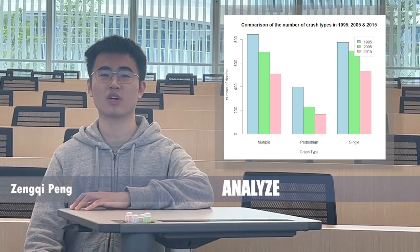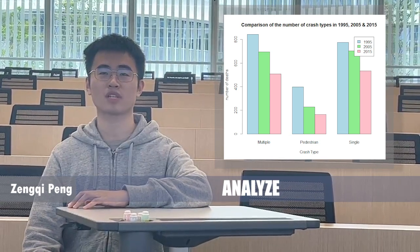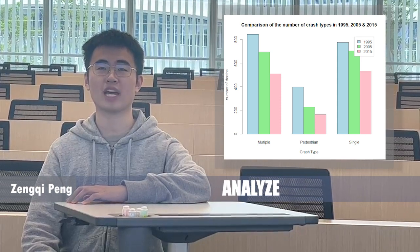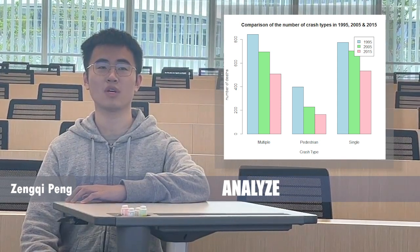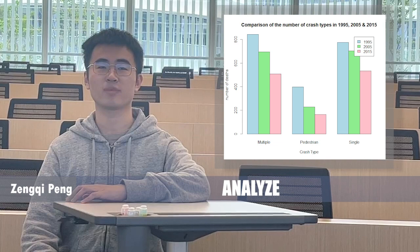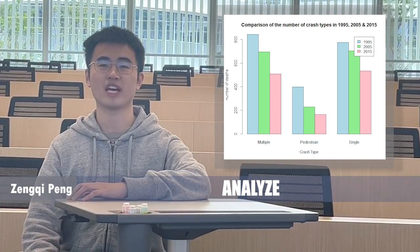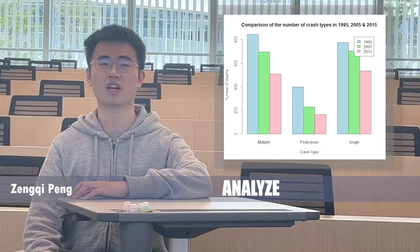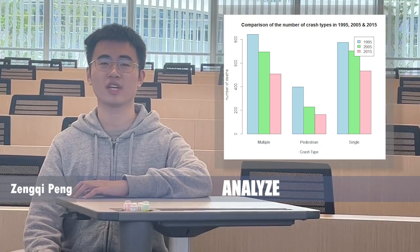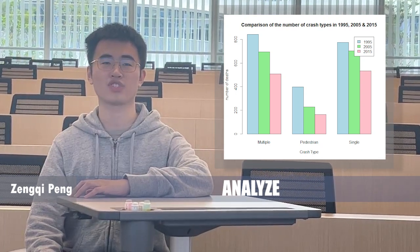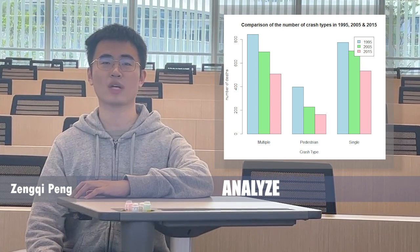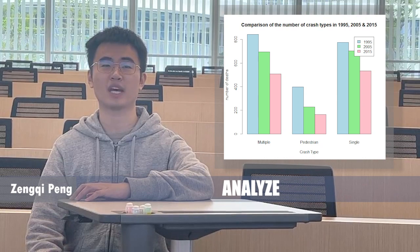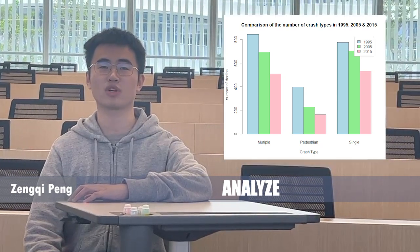A vehicle-related crash occurs when the driver ignores crucial environmental information and takes wrong actions. For example, a new driver may not know which information to focus on when changing direction at an intersection. If there are other cars at the same intersection, it could lead to a vehicle collision. Therefore, detecting surrounding vehicles and unexpected obstacles quickly and reacting correctly is crucial for driving safety.